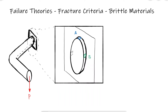Additionally, any stress element on the surface of the structure, at the point where the structure meets the wall, would be subjected to torsion. This means that stress element A is subjected to tension and torsion, including shearing stress, and stress element B is subjected to a shearing stress due to transverse shear and a shearing stress due to torsion.